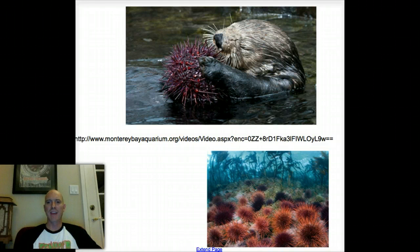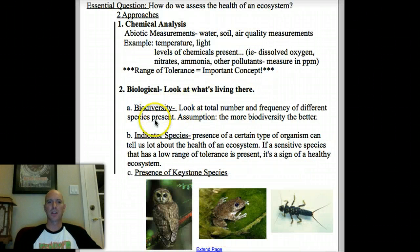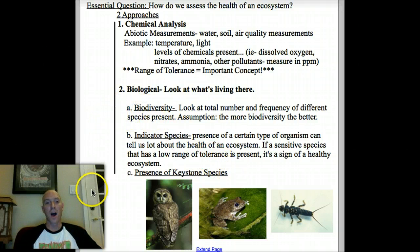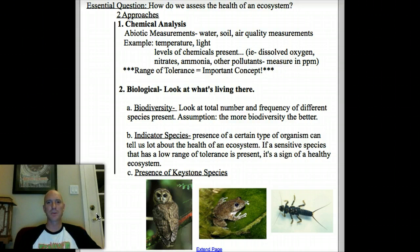So there we have it — three biological things we're looking for when assessing ecosystem health: biodiversity, indicator species, and keystone species, which can also be indicator species and help with biodiversity. We'll be applying these concepts to the Arroyo de Oro ecosystem next week. Thanks everybody for sticking with me — see you next time.